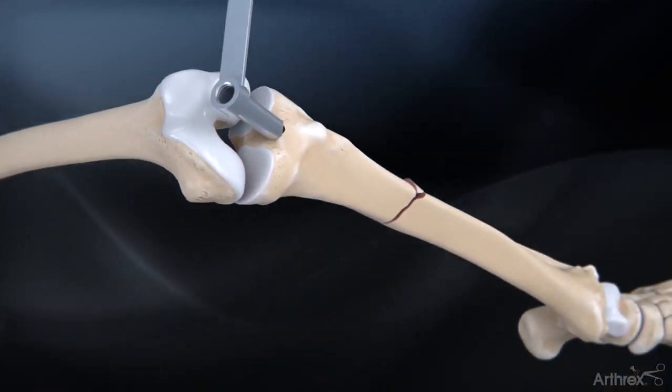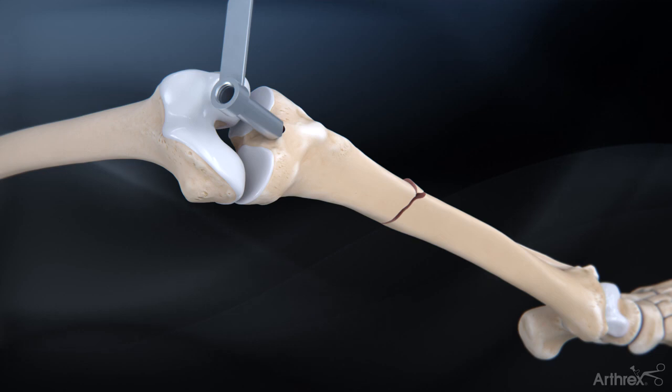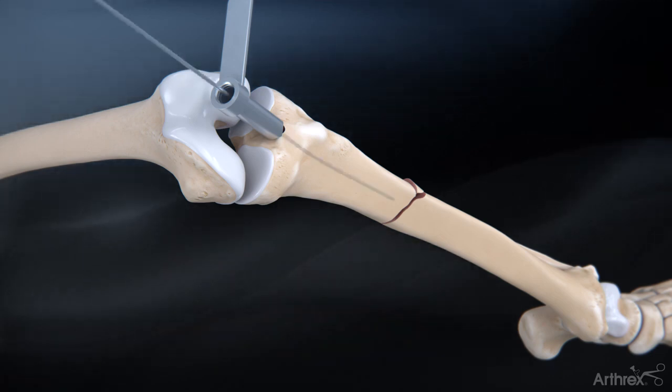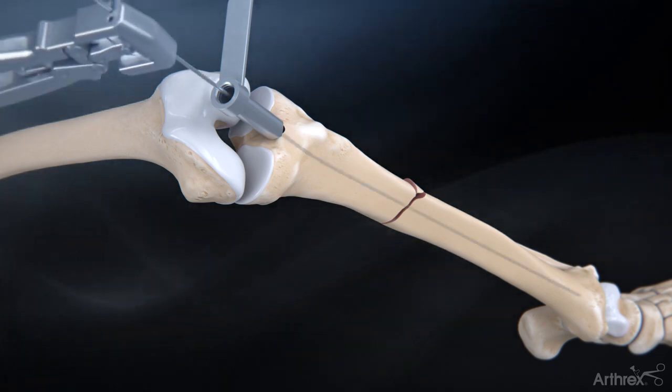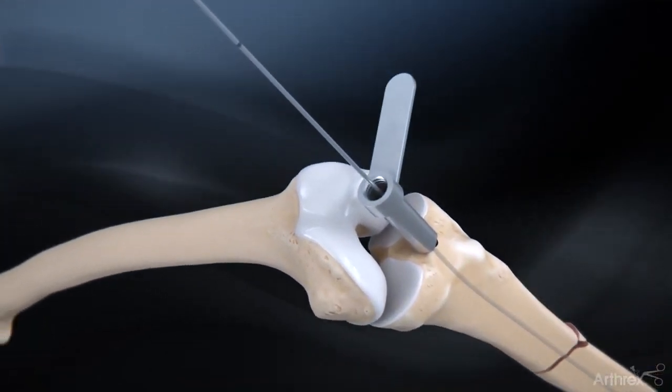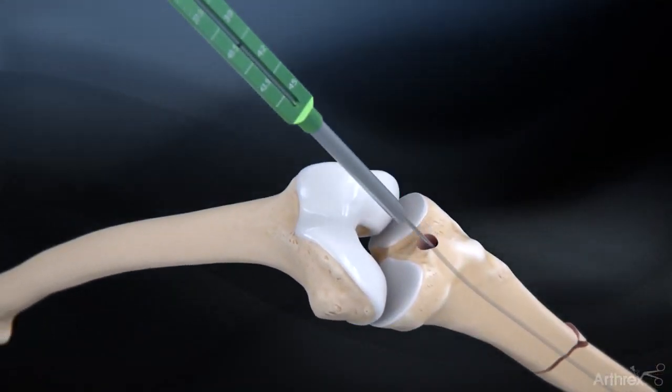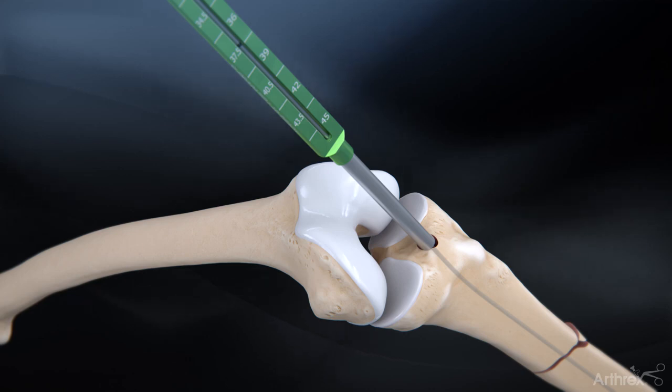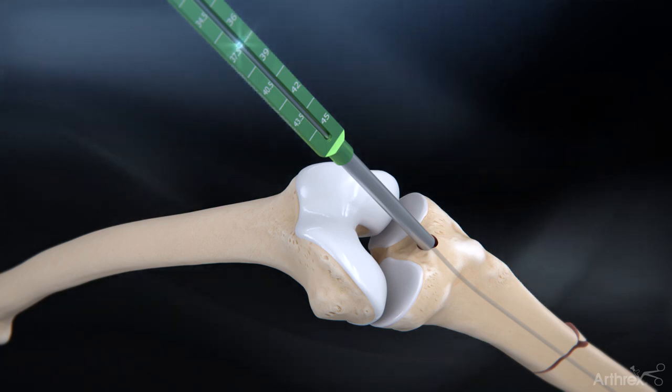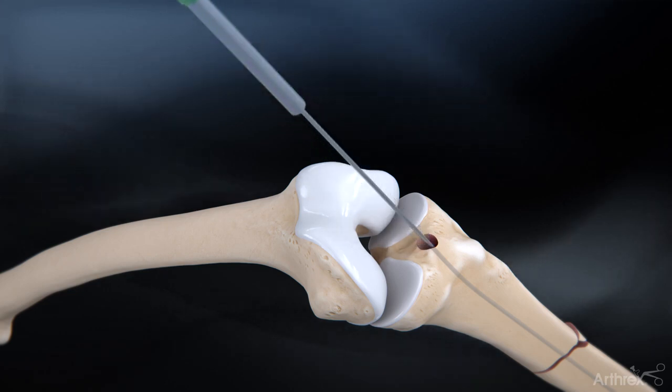After accessing the tibial canal, insert the 3.0 mm ball nose guide wire down the shaft of the tibia and past the fracture using the guide wire gripper. With the tip of the guide wire at the desired depth, measure the length of the nail by sliding the guide wire depth gauge over the guide wire and reading the measurement based on the etched line.